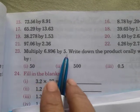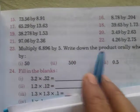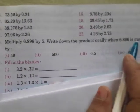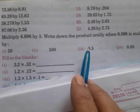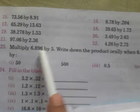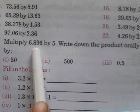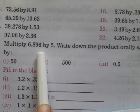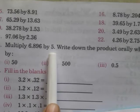Multiply this one by 5. Write down the product orally when this one is multiplied by 50, 500, 0.5 and 0.05. Here we have a number 6.896. We have to multiply this one by 5.